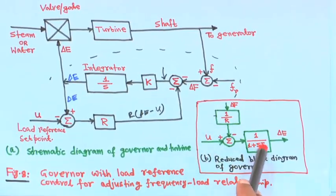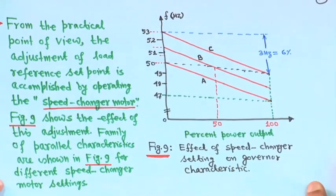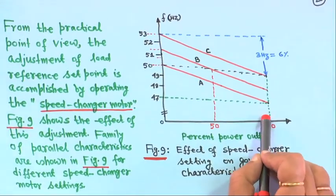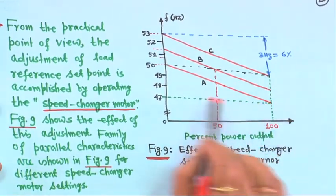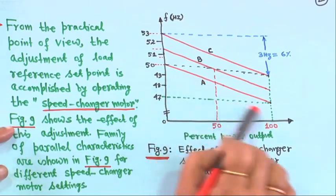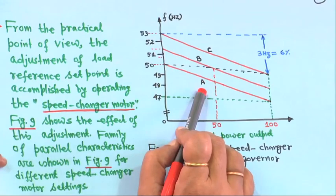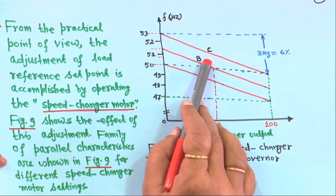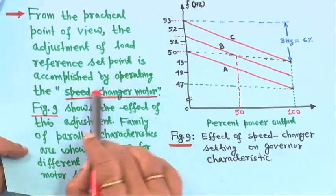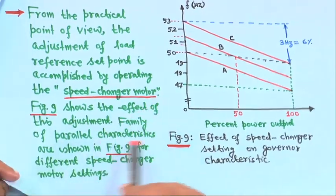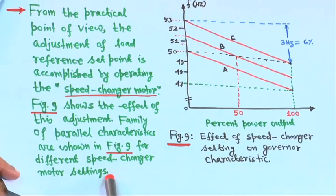I have already shown you how to make it. Suppose you have 3 units in a 50 hertz system with 3 different droop characteristics for 3 different generating units. From the practical point of view, the adjustment of the load reference set point is accomplished by operating the speed changer motor. Figure 9 shows the effect of this adjustment — a family of parallel characteristics for different speed changer motor settings.